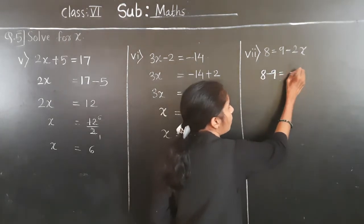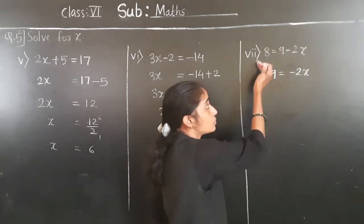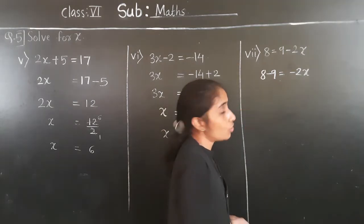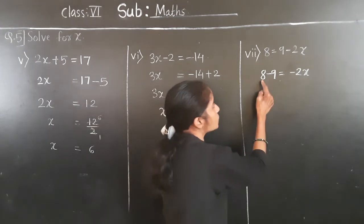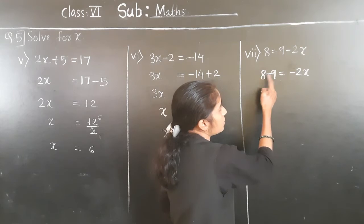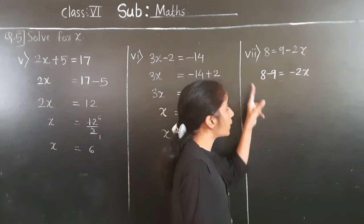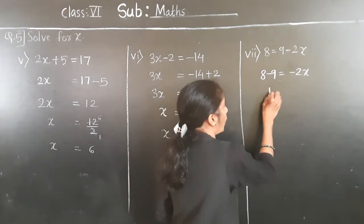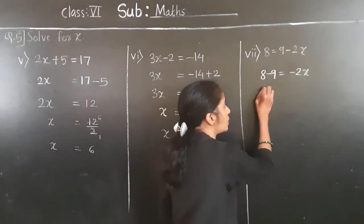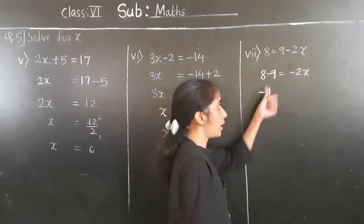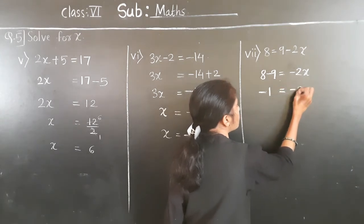So minus 9 is equal to minus 2x. What remains on the right side is minus 2x. 9 had a positive sign — transferring to the left gives minus. Now on the left: 8 plus minus gives minus. Subtract 9 from 8 — we get 1. 9 is the greater number and has negative sign, so the answer is minus 1. So minus 1 is equal to minus 2x.